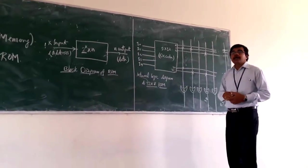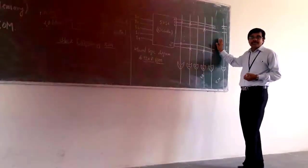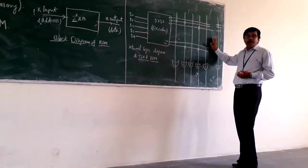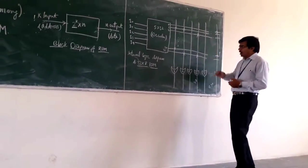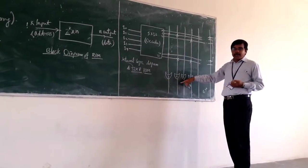You are seeing that we can do the programming only at the output space. Here we can do the programming. If we are doing the programming at your OR gate, that is called your programmable read-only memory.